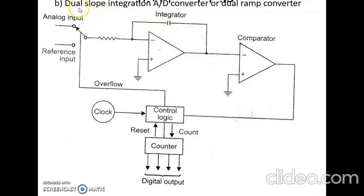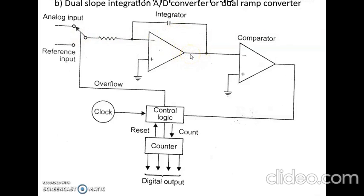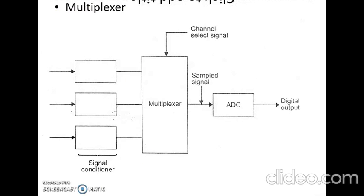As we can see in the diagram, the dual slope integration ADC uses an integrator, comparator, control logic, and counter. The analog input voltage and the reference input voltage are successively connected to the integrator via a switch, and these two voltages must be of opposite polarities. The fixed voltage is integrated for a fixed sample time, then the integrated value is discharged at a fixed rate and the time to do so is measured by a counter. The count is then a measure of the analog input voltage.